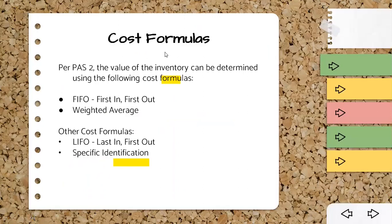These cost formulas will help us assign the peso value to our inventories. According to PAS 2, the value of inventory can be determined using the following cost formulas. Take note: only two cost formulas are recommended by PAS No. 2 — FIFO or first in, first out, and the weighted average method. We also have other cost formulas: LIFO or last in, first out, and specific identification. We will discuss each of these cost formulas one by one.